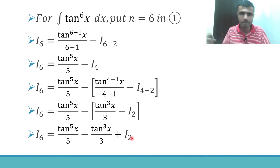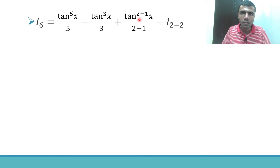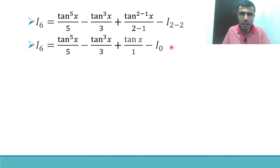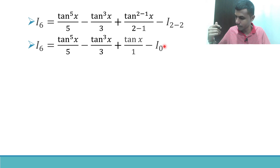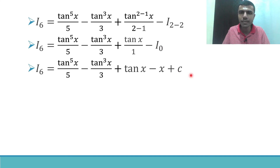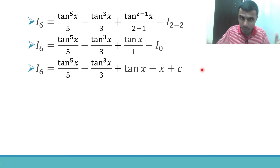For I_2, put n = 2: I_2 = tan^(2-1) x / 1 − I_0 = tan x − I_0. Now I_0 is the integral of tan^0 x dx = the integral of 1 dx = x. So I_0 = x. Putting it all together: I_6 = tan⁵x/5 − tan³x/3 + tan x − x + C.